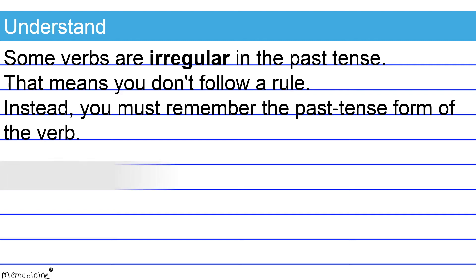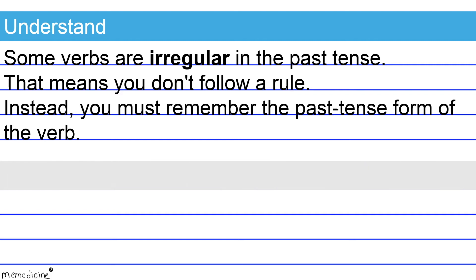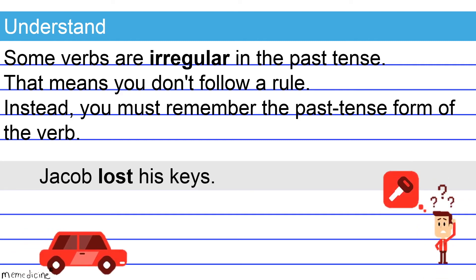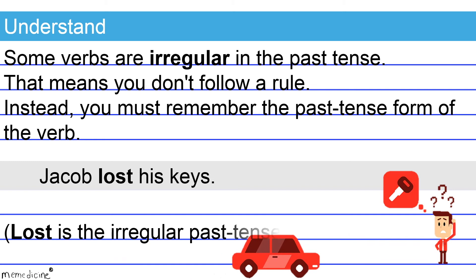Check out this example: 'Jacob lost his keys.' Lost is the irregular past tense form of the verb 'lose.' This is a correct shift and the overall sentence is formatted correctly.